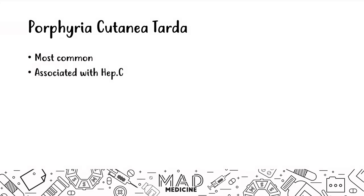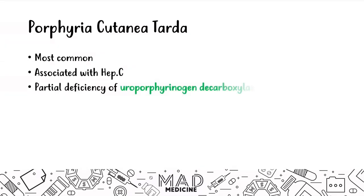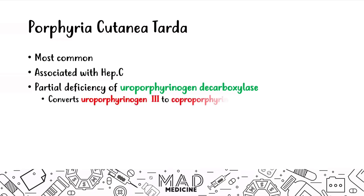In this disease, you have a partial deficiency of an enzyme called uroporphyrinogen decarboxylase. This enzyme converts uroporphyrinogen 3 to coproporphyrinogen 3.